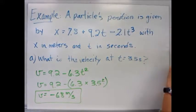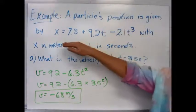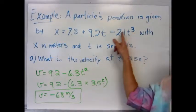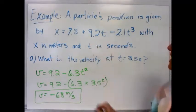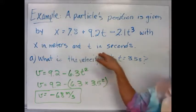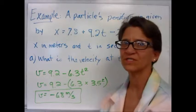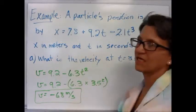Our second example is about a particle, and its position is given by this equation. Notice we have t cubed and just t here. x is in meters and t is in seconds. A lot of times you won't see units in these types of equations. They're just known by what's given.